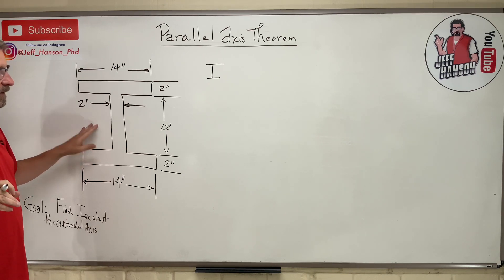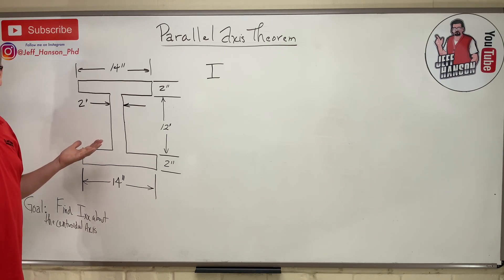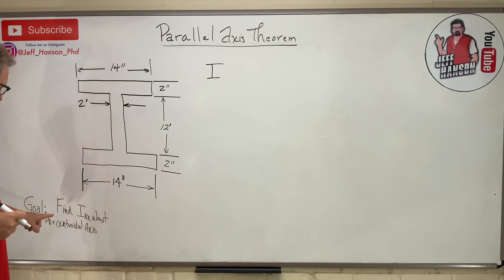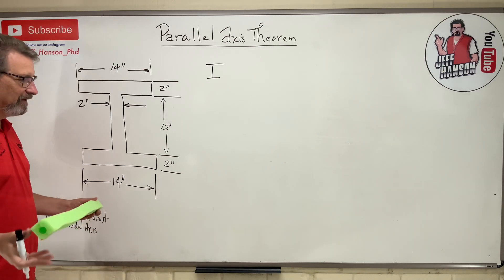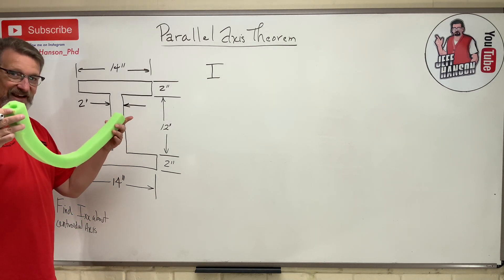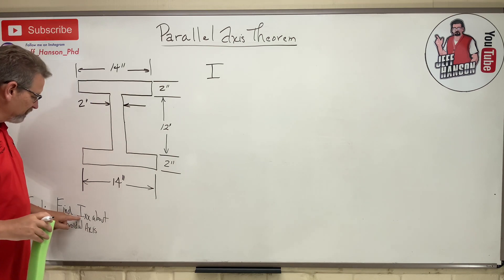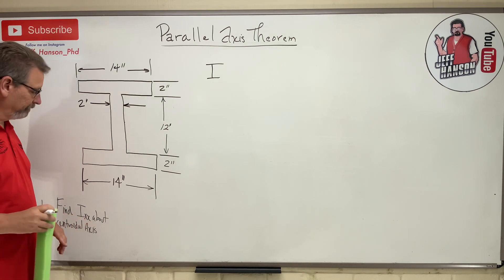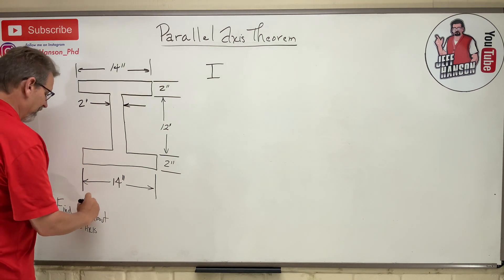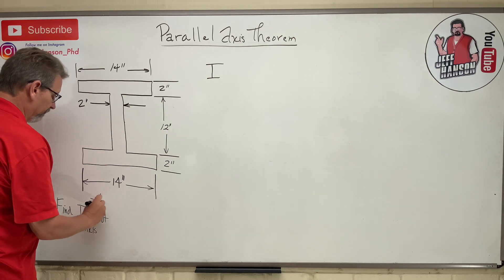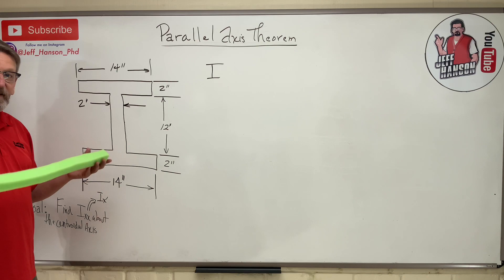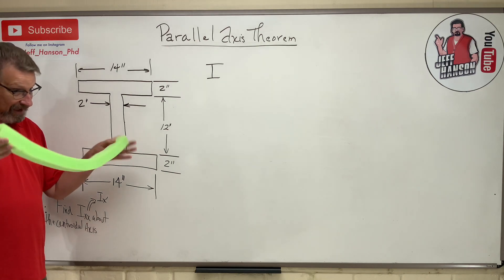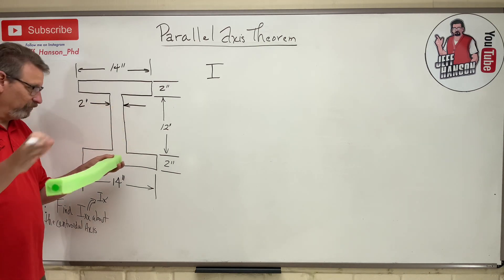So number one, this is a symmetric part, and so you remember what they're asking me to find I_xx about the centroidal axis, and remember what I_xx means, that means bending around that x-axis. You might see this written as I_x-prime. Same thing, that's bending around that x-axis, the axis that goes this way.